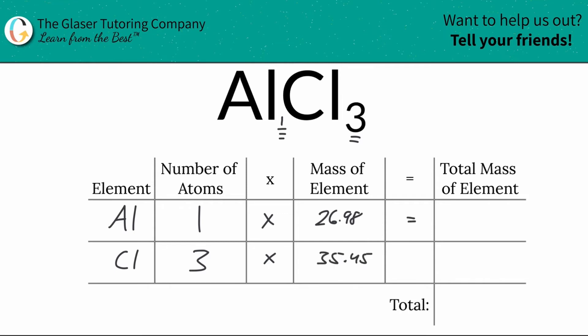Now all you're simply going to do is multiply the row to get the total mass of the element in the entire compound. So this is going to be 26.98 grams of aluminum, or AMU for molecular mass. And then the total mass of the chlorine here is going to be roughly about 106.35.